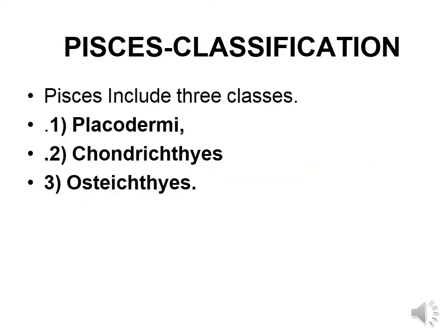The superclass Pisces is divided into three classes: Placodermi, Chondrichthyes, and Osteichthyes. Placodermi is an extinct form. Chondrichthyes are cartilaginous fishes and Osteichthyes are bony fishes. Chondrichthyes is divided into two subclasses: subclass Elasmobranchii, which contains Narsin (rays), and subclass Holocephali, which includes Chimaera.